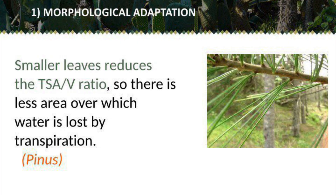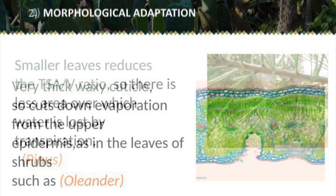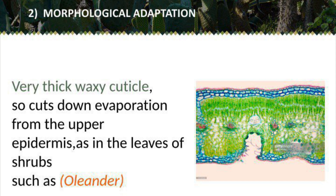The first morphological adaptation is smaller leaves, which reduces the total surface area to volume ratio, so there is less area over which water is lost by transpiration. This can be seen in pinus. The second morphological adaptation is a very thick waxy cuticle, which cuts down evaporation from the upper epidermis, as in the leaves of shrubs such as oleander.